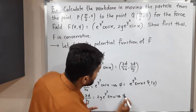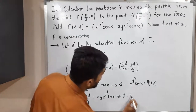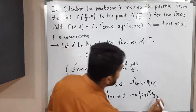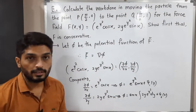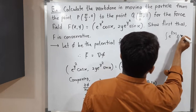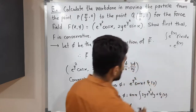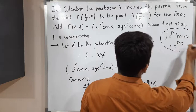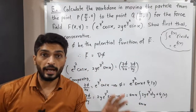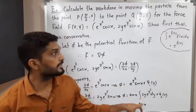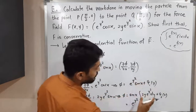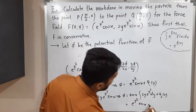Now integrating ∂φ/∂Y = 2Y·e^(Y²)·sinX with respect to Y: sinX comes outside, and we need ∫2Y·e^(Y²)dY. We use the standard result ∫e^(f(x))·f'(x)dx = e^(f(x)). The derivative of Y² is 2Y, which is present, so the result applies. We get φ = e^(Y²)·sinX + C₂(X).